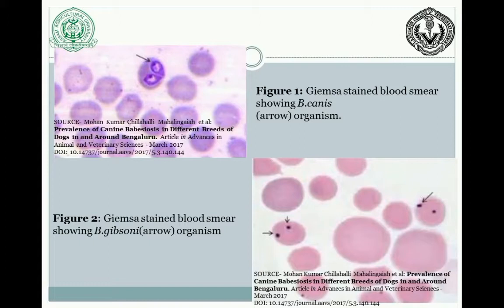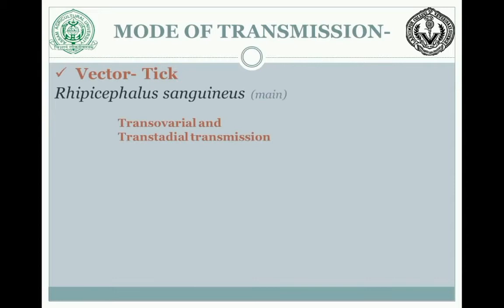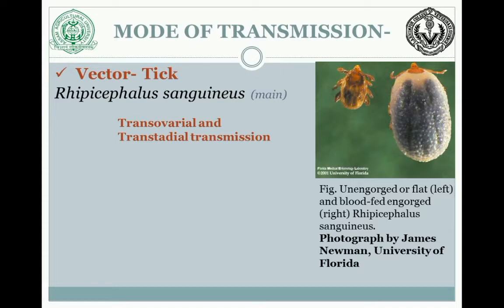Coming to the mode of transmission: the most important mode is through the vector. The organism transmits transovarially — through the generations — and transstadially — through the different stadia of the vector. Here is a picture showing Rhipicephalus sanguineus: the first shows an unengorged vector and the second is blood-fed and fully engorged.